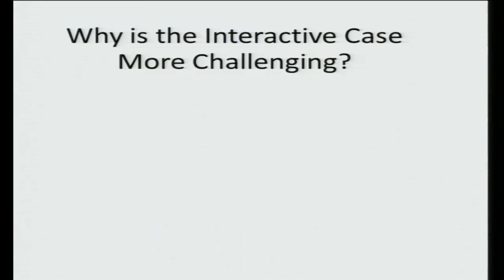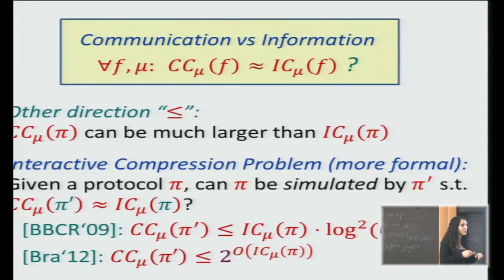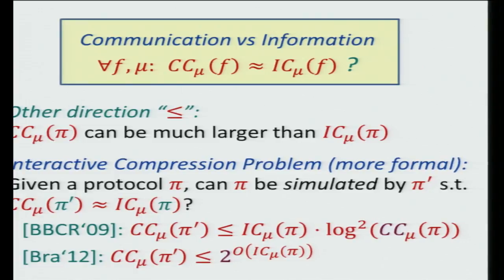Our question is whether you can find a pi prime with communication that is roughly the information, without terms that depend on the communication and without being exponential. This seems really hard. Let me briefly explain why compressing in the interactive setting is more challenging than in the one-way setting. There are two ways of defining what we mean by simulating: you can think of it as computing the same function with similar error, or you can say that given the transcript of pi prime you can retrieve the transcript of pi.